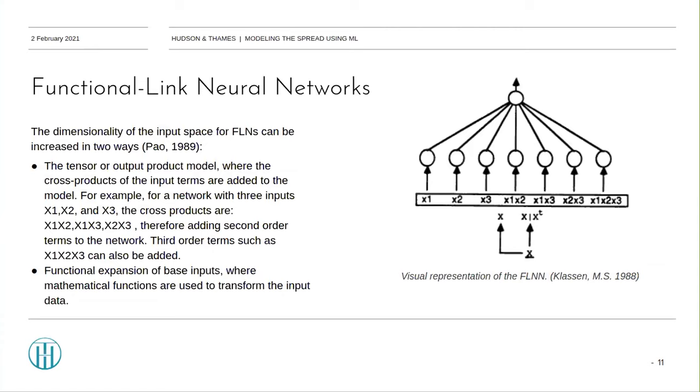Functional-link neural networks are one type of single-layer higher-order networks. Basically, they consist of a number of input nodes and a single processing layer, which functionally expands the input space by pre-processing the inputs. The dimensionality of the input space for FLNs can be increased in basically two ways. The first way is cross-products of the input terms are added to the original dataset. For example, for a network with three inputs, X1, X2, and X3, second-order terms would be three pairwise cross-products. Third-order terms can also be added.